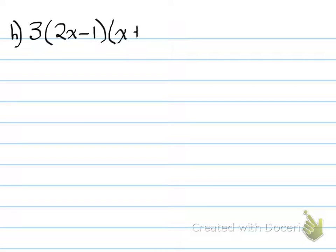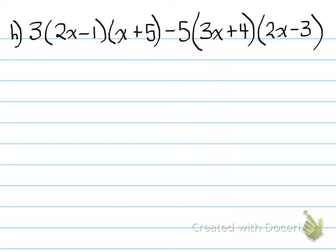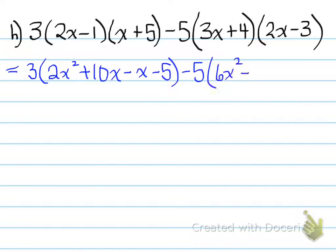Moving forwards, next one, h. Here's another example of one, which is a little more complicated. Here we go. So what do we do here? Well, just like we did the last time, we expand the brackets first and leave the number on the outside alone. So 3 stays out, and we expand it: 2x squared plus 10x minus x minus 5. And then minus 5 and bracket the next one: 6x squared minus 9x plus 8x minus 12. And that, again, guys, is just foiling this out, expanding it out to get those values.